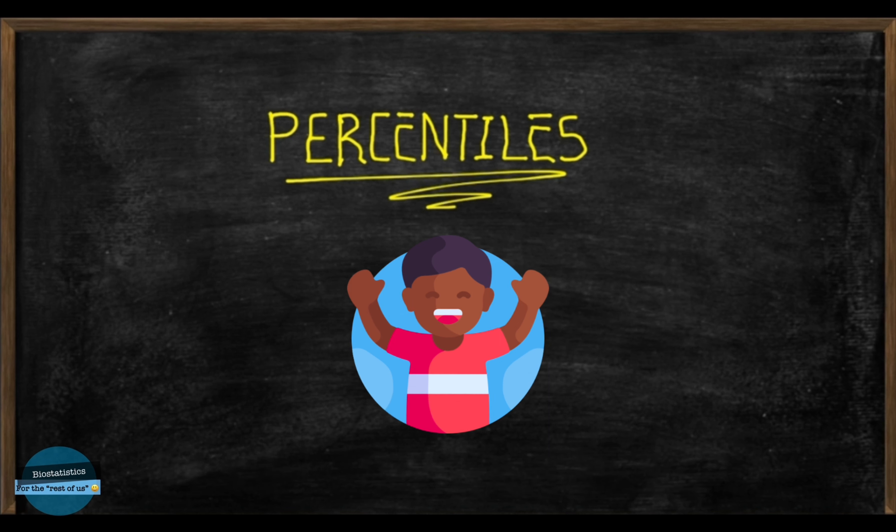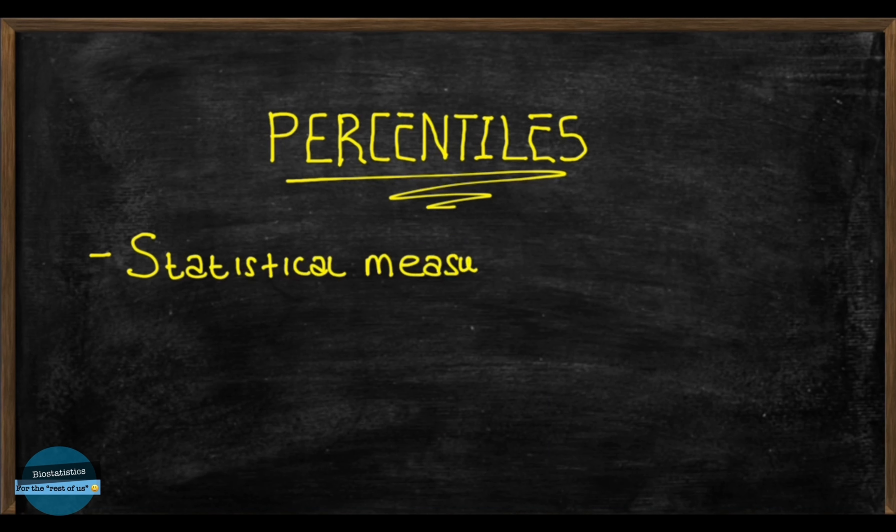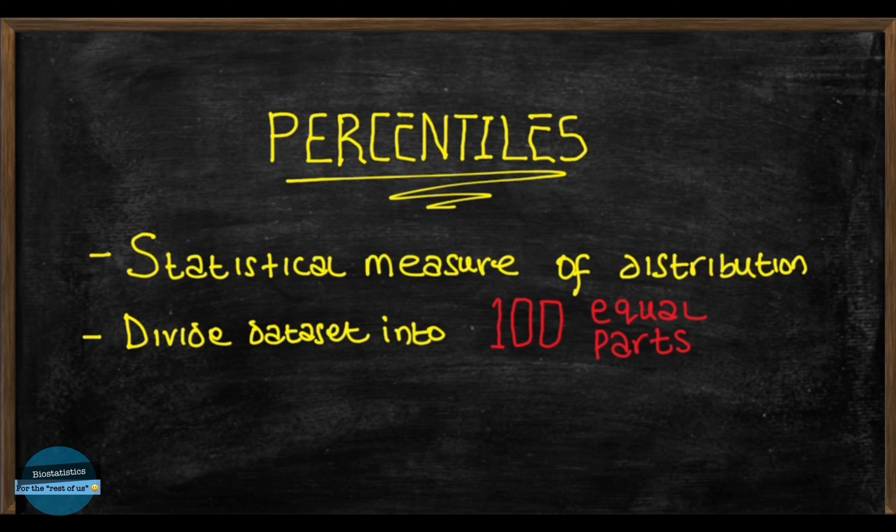Well, stick around to find out. A percentile is a measure used in statistics to understand how data is distributed. Percentiles divide a data set into 100 equal parts and indicates the value below which a given percentage of the data in a data set falls.